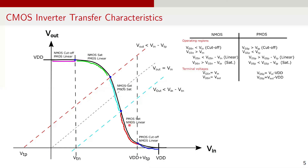Now let's determine what region PMOS is in when the NMOS is in linear region. Until the blue section in the graph, the PMOS is in cutoff region. As VIN decreases further, it becomes smaller than VDD plus VTP and the PMOS turns on, as VGS becomes more negative than VTP. Also, VDS is less than VGSP minus VTP as Vout is a small value and VIN is almost near VDD. So VDS is more negative compared to VGS minus VTP for PMOS and it transitions to saturation region.